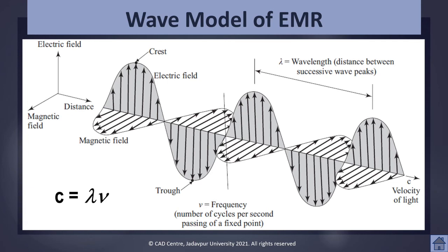To understand electromagnetic energy, we have two different models. One is called the wave model and another is called the particle model. In the wave model, electromagnetic energy is described as a combination of two fluctuating fields perpendicular to each other, and they travel at the speed of light — approximately 3 × 10⁸ meters per second.